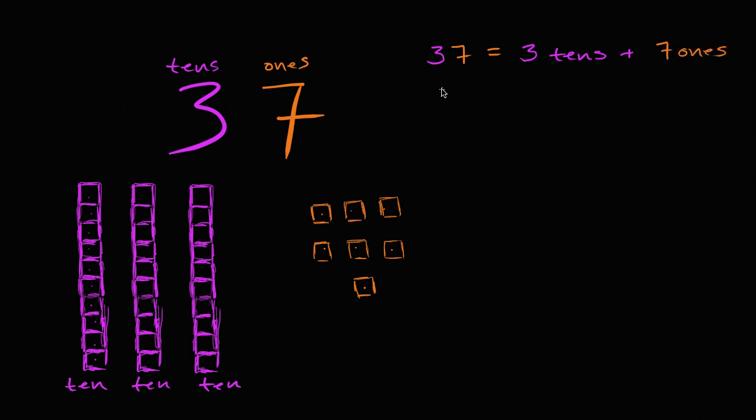Now what if I wanted to add something to 37? What would 37, 37 plus, plus 2 be equal to? How many tens and how many ones? Let's think about it, we're now going to add 2. So we're adding 2 ones. So we're going to add 1 and 2.